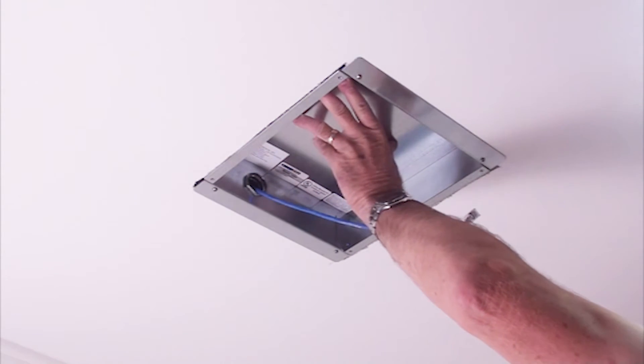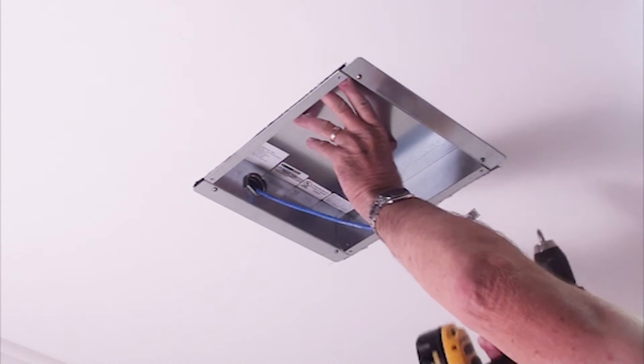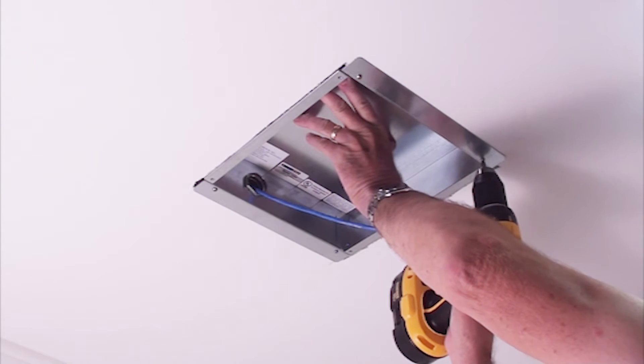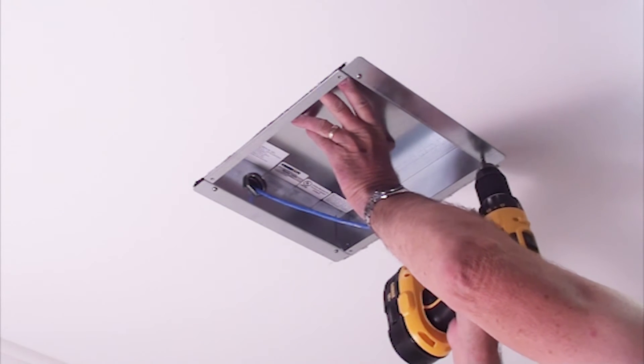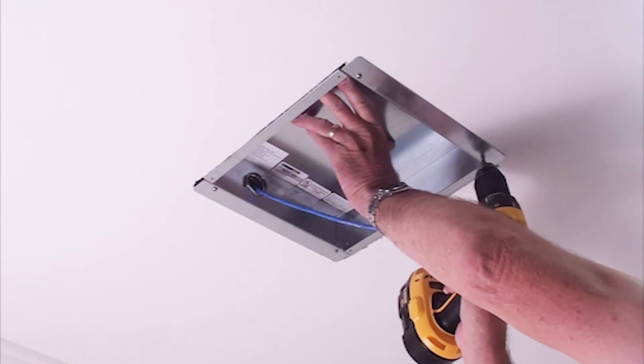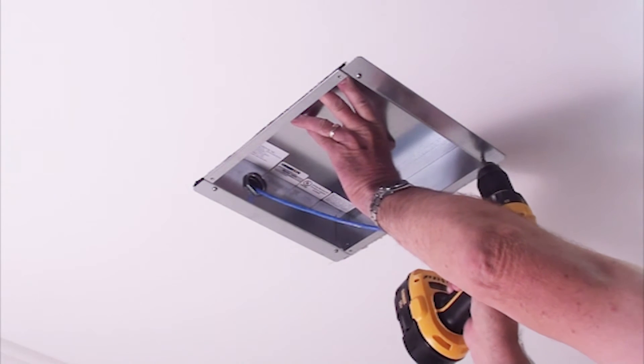Using either a handheld screwdriver or an electric screwdriver set to the lowest torque setting, rotate the screws located at the four corners. Rotating the screws will tighten the clip against the drywall.